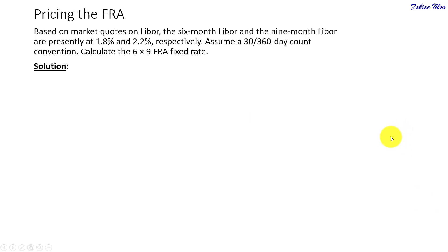So, in this example, let's say you are given market quotes on LIBOR and the 6 months LIBOR and the 9 months LIBOR are given as 1.8% and 2.2% respectively and assume a 30 over 360 day count convention so calculate the 6 by 9 FRA fixed rate.